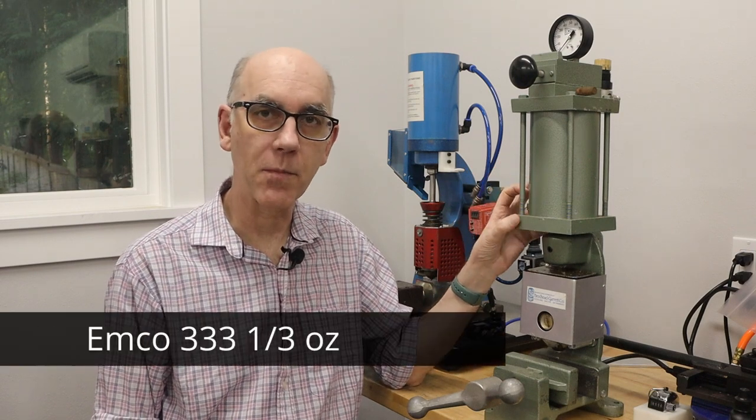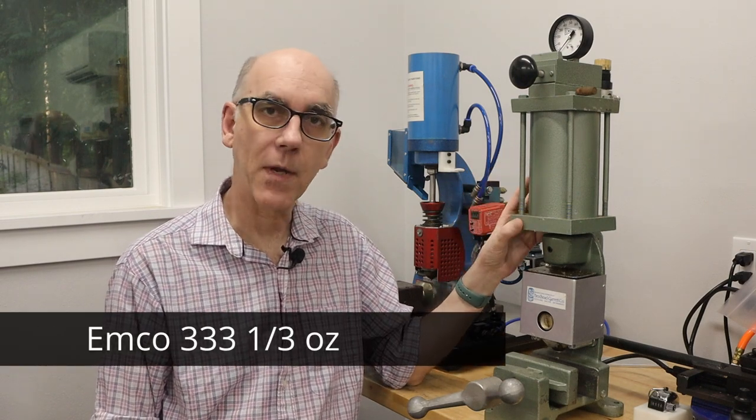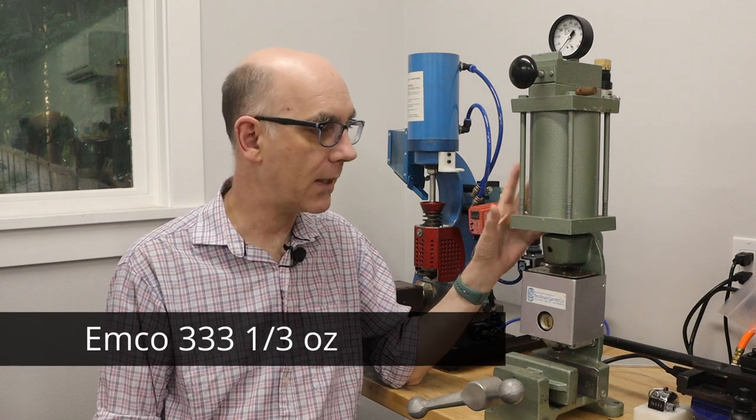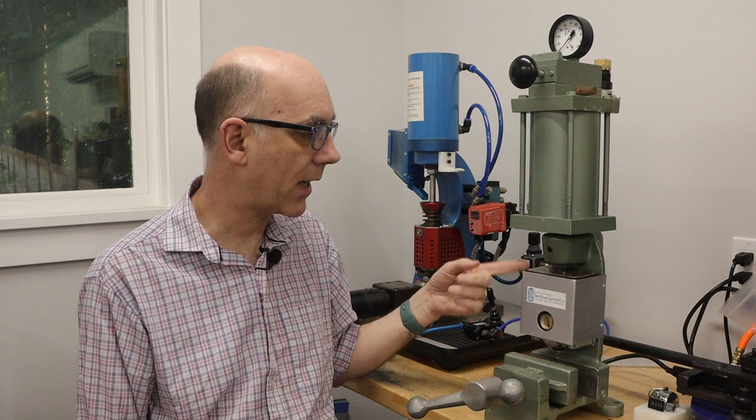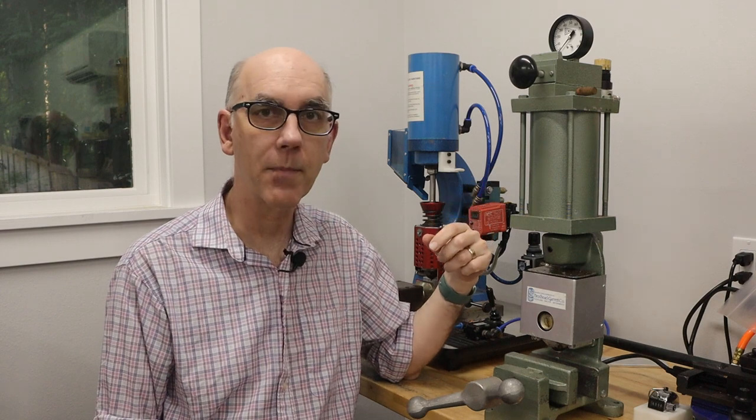Now, let's take a closer look at this machine. This was my first injection molding machine. I bought this about 15 years ago from eBay for $500. Now, the same type of machine seems to go for about $1,500 today, so the prices have gone up.